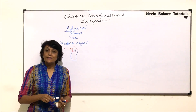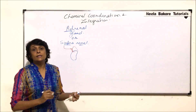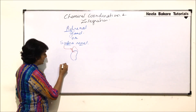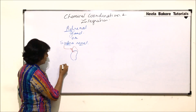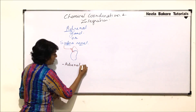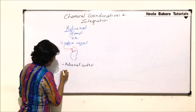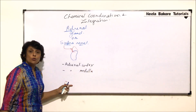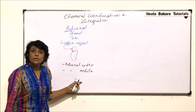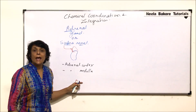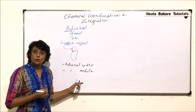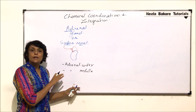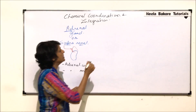The suprarenal or adrenal gland is divided internally into two distinct parts. The outer part is known as the adrenal cortex and the inner part is known as the adrenal medulla. These two parts differ from each other structurally, functionally, and in terms of origin. We will first compare these two parts and then move on to the hormones secreted by them.